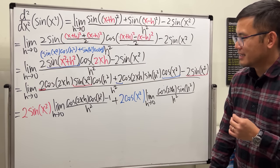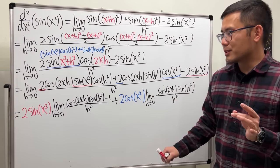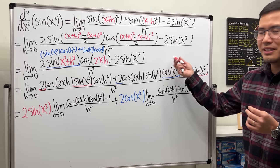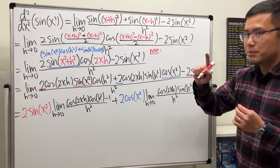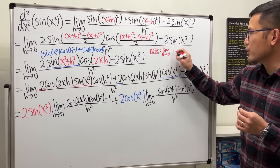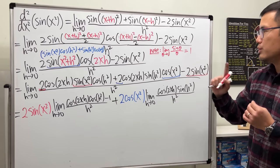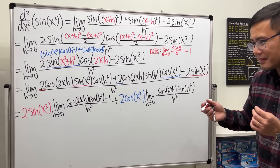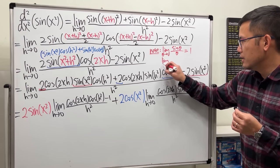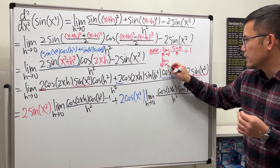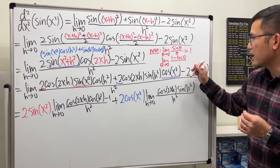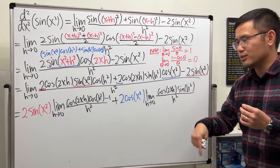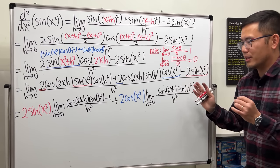Here are the two famous trig limits we'll use. First: the limit as theta approaches zero of sine theta over theta equals 1 — do not use L'Hôpital's rule here since this limit is used to prove the derivative of sine. Second: the limit as theta approaches zero of (1 minus cosine theta) over theta equals zero.